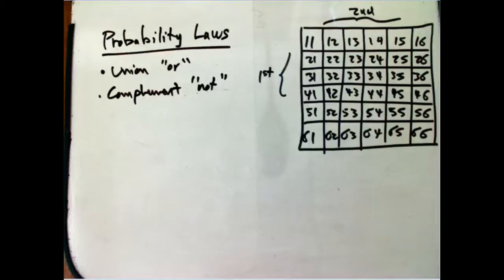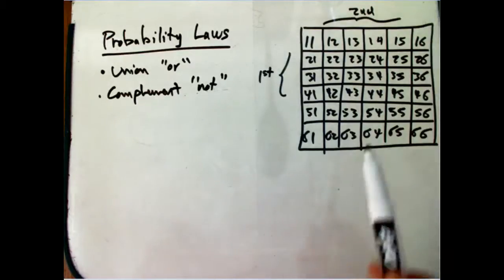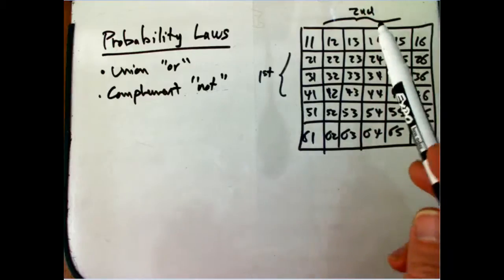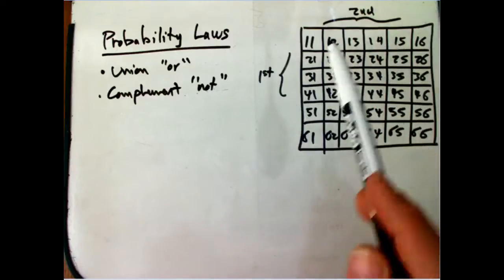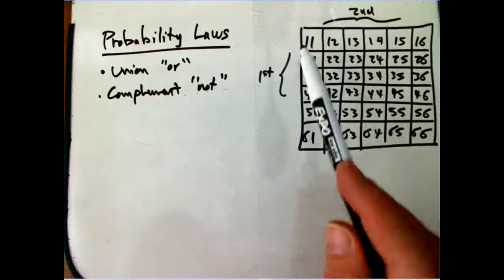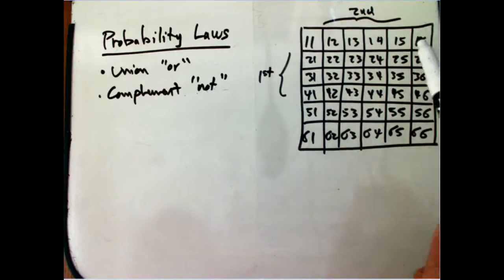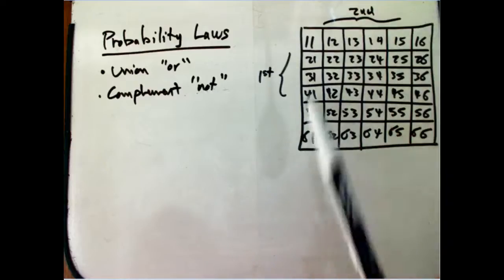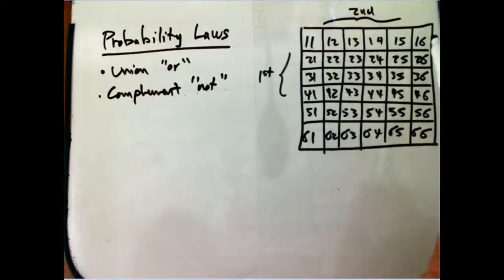Some examples of how probability laws work in a very concrete case where we can check that they really are correct, because we have the sample space written out and we're very familiar with it. This is a roll of two dice — first roll one through six, second roll one through six — and so we've got 36 equal probability outcomes.